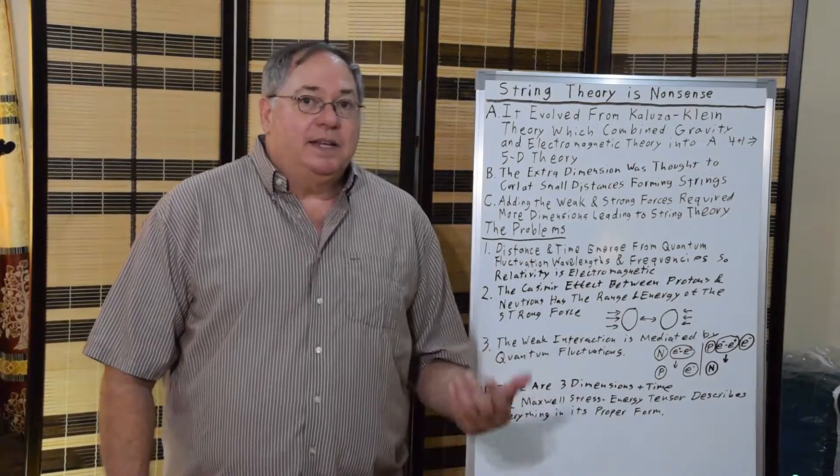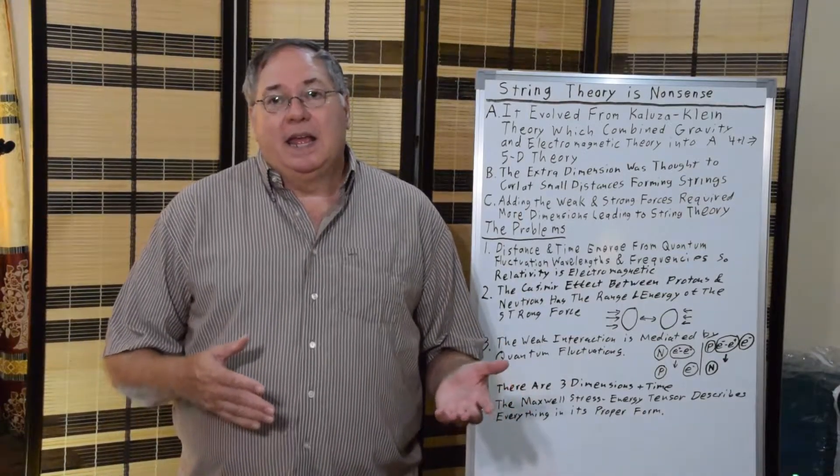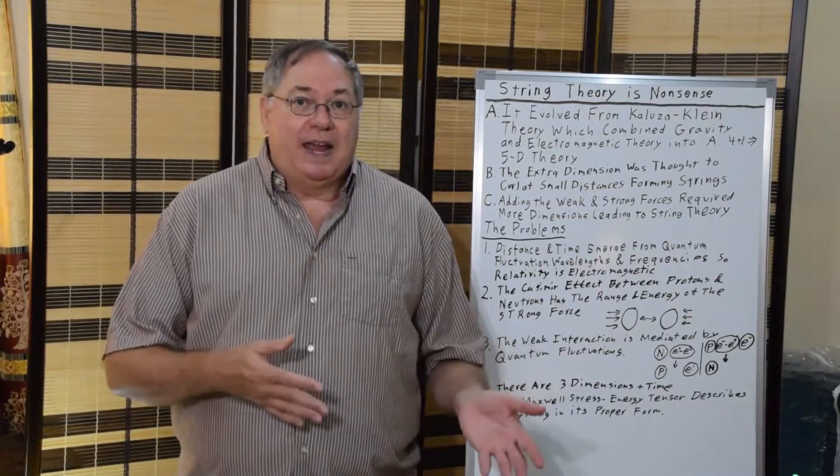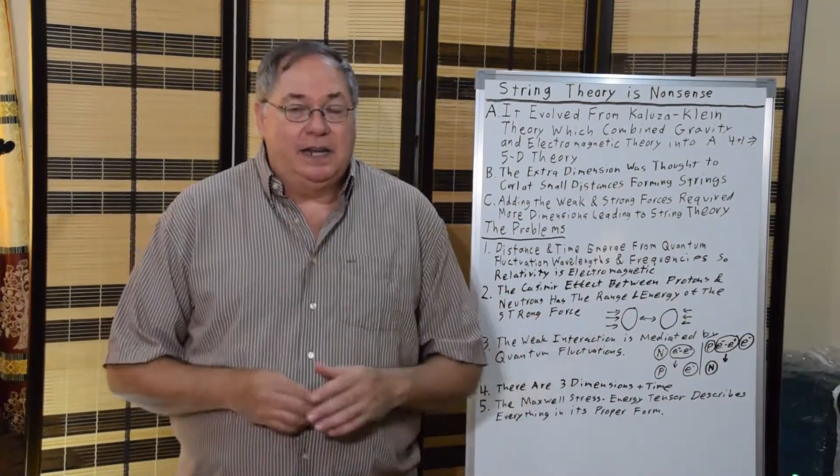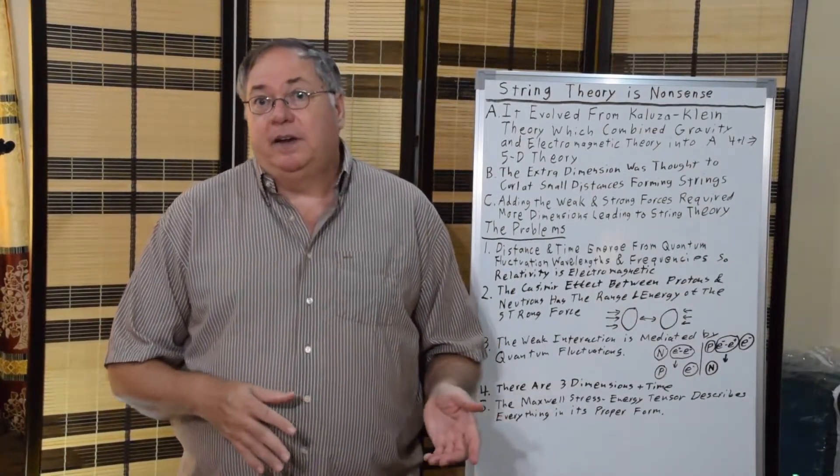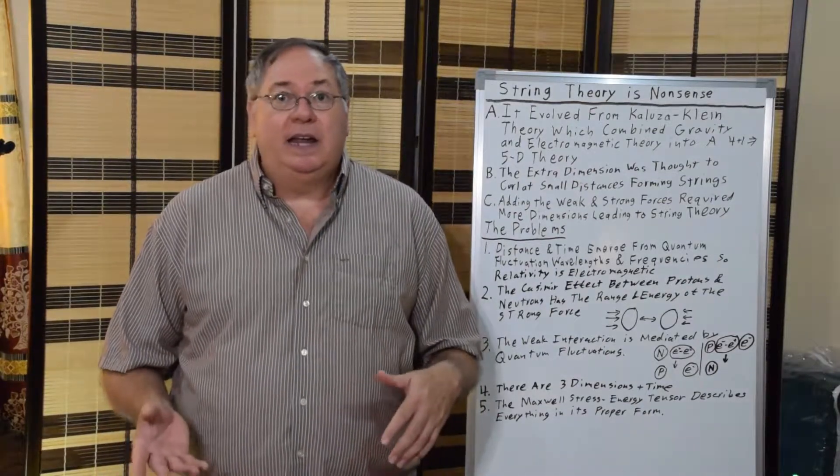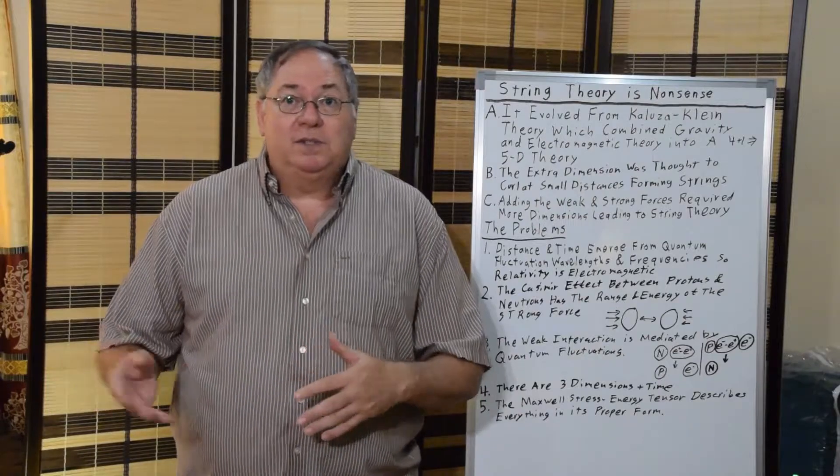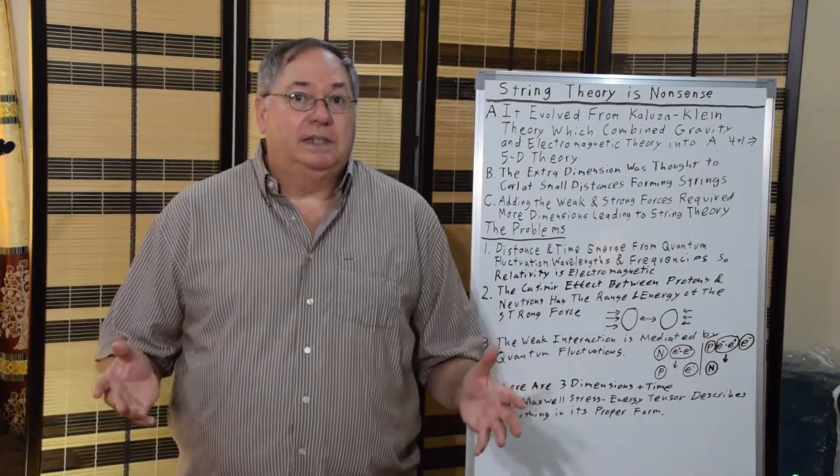Now, to go back historically, we ended up with String Theory starting with Kaluza and Klein Theory, in which they attempted to combine Relativity Theory with Electromagnetic Theory in a five-dimensional, a four plus one equals five-dimensional problem solving space.